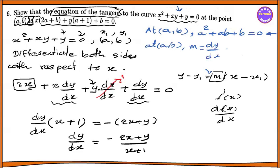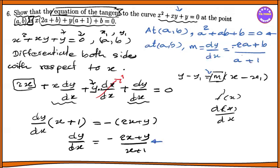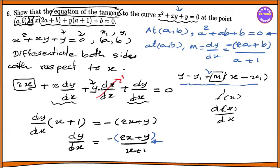dy by dx equal to... This gives us the slope m at the point. To answer this question, you substitute into the equation for the tangent line.